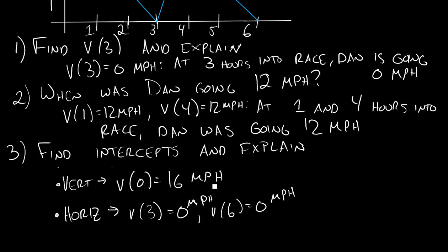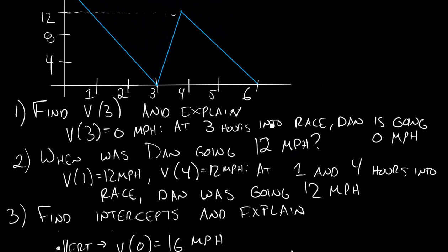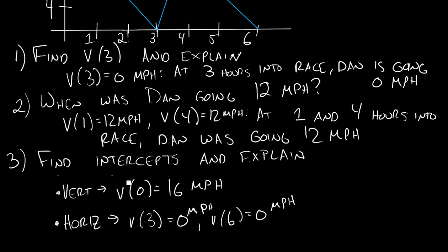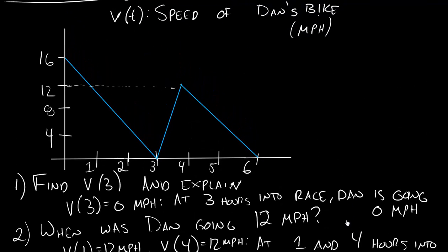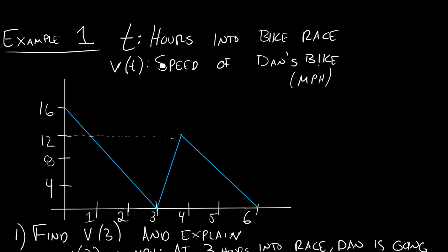That's it for evaluating functions. Notice with the three questions we had: they give us an input and we find the output; they give us an output and we find the input; and then we talk about intercepts. A really important thing is to tell the story the whole time — to give that sentence afterwards. To do that, just focus on the input value and its units, and the output value and its units. You'll have plenty more practice in the text, and there are some good examples in the book.